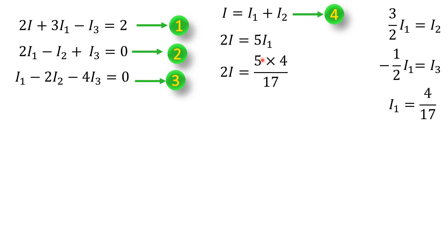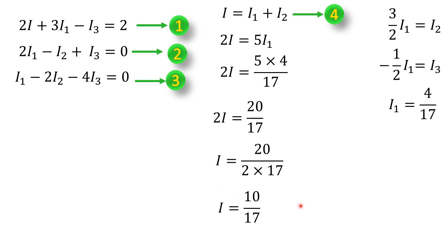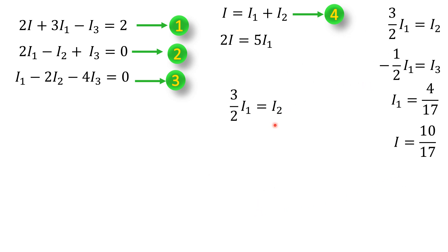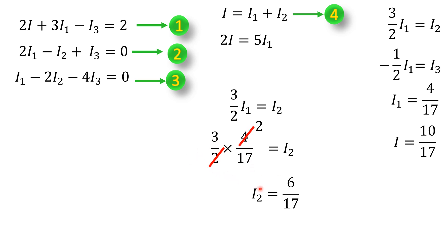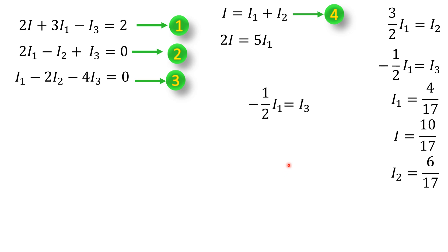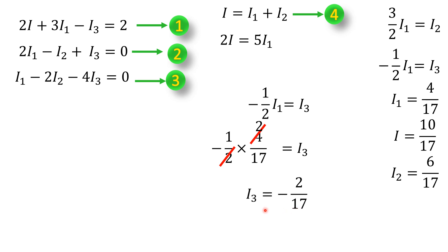Substituting I1 equals 4/17 to find I: 2I equals 5 times 4/17 equals 20/17, so I equals 10/17 ampere. For I2: 3/2 times 4/17 equals 6/17, so I2 equals 6/17 ampere. For I3: minus 1/2 times 4/17 equals minus 2/17, so I3 equals minus 2/17 ampere.